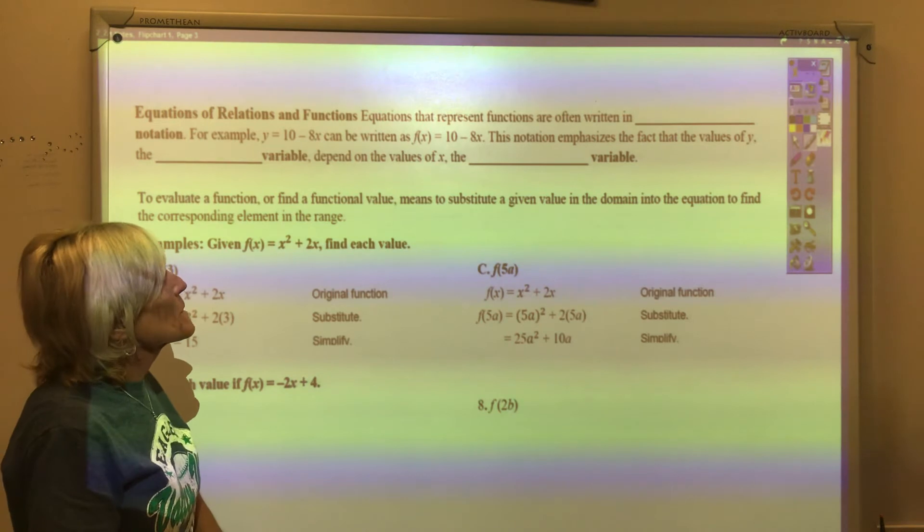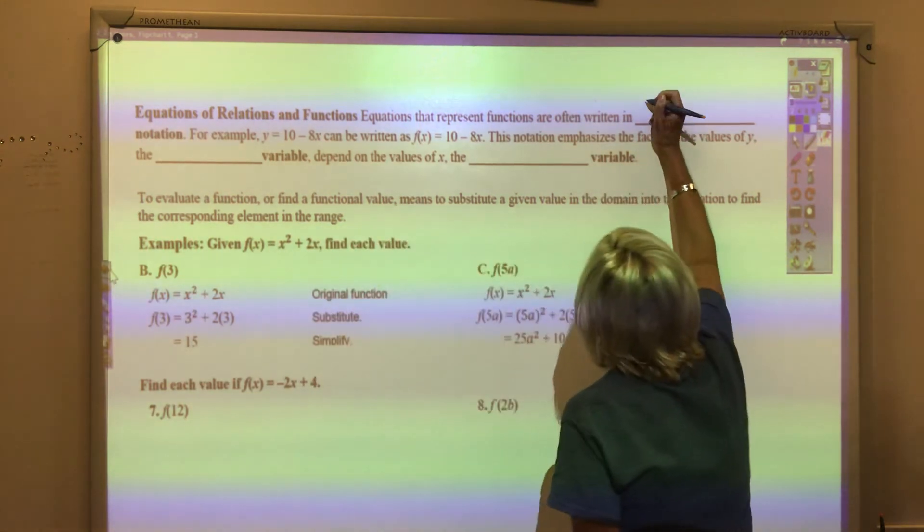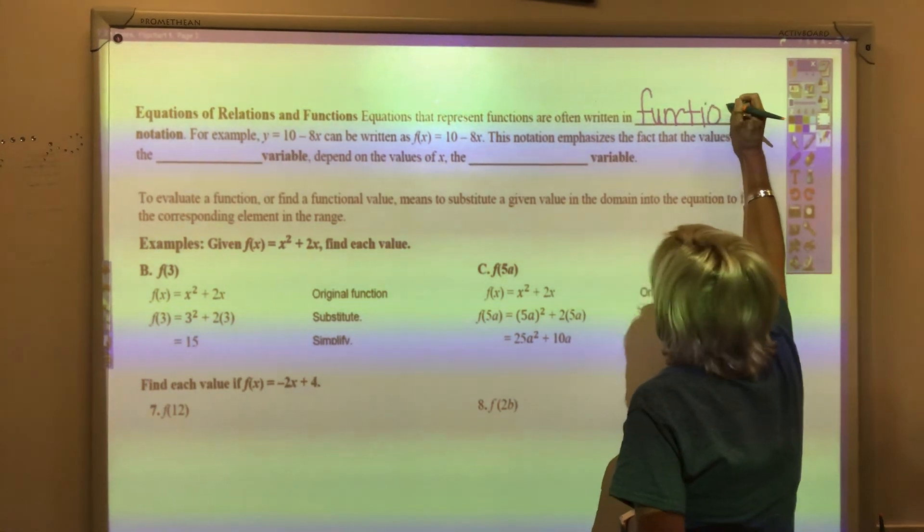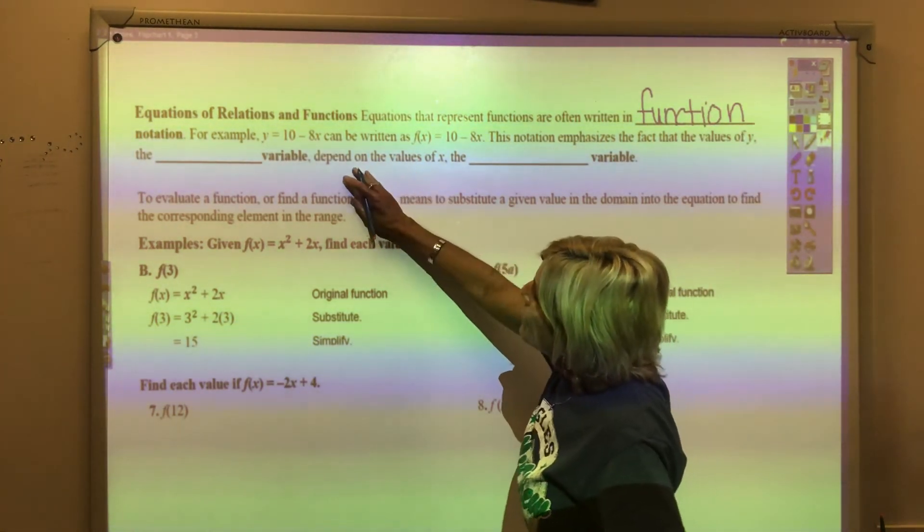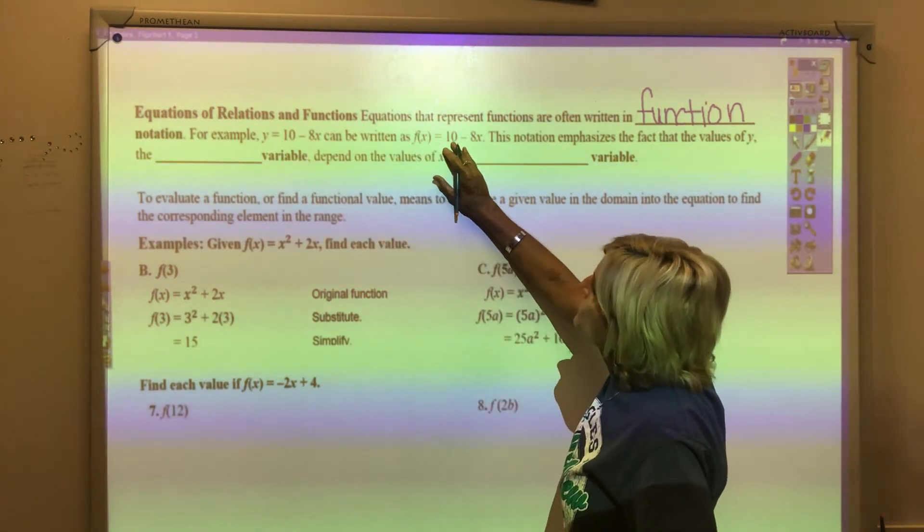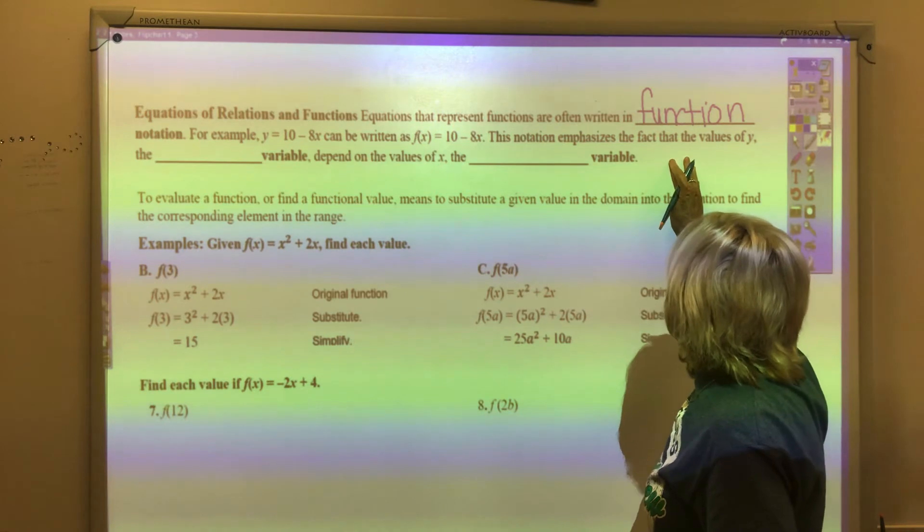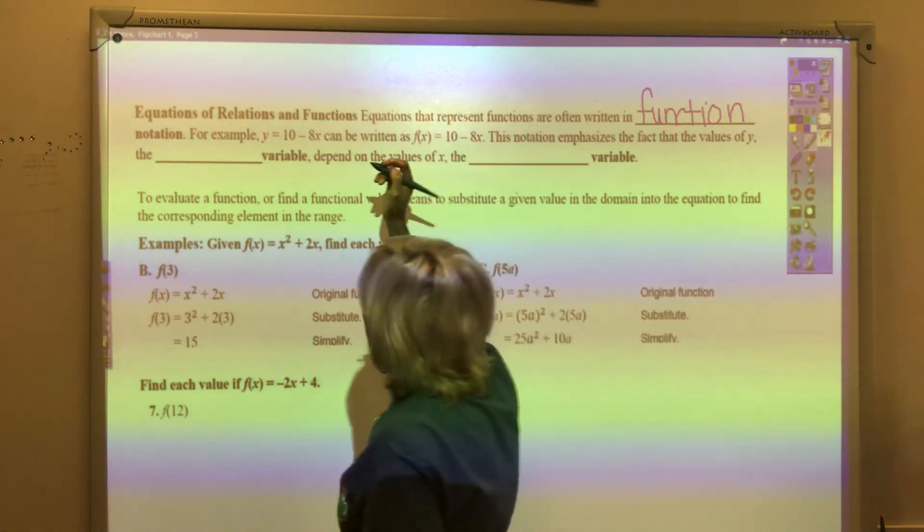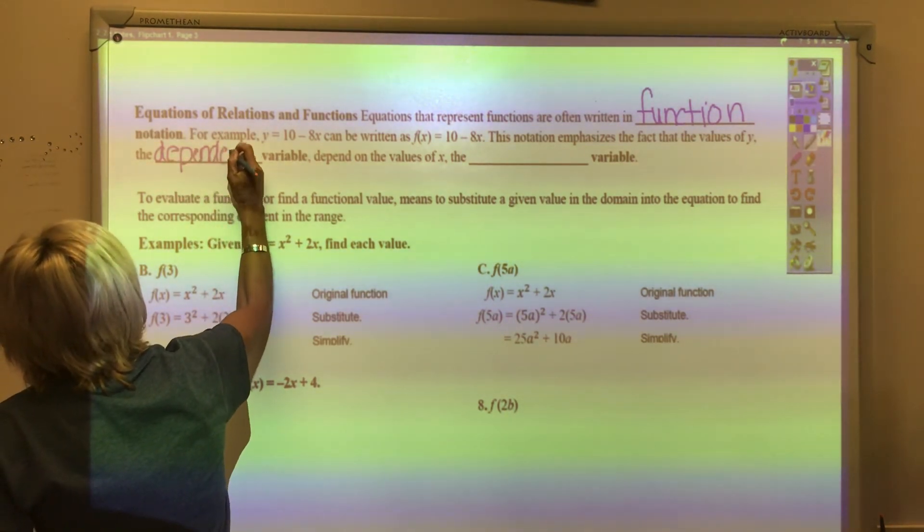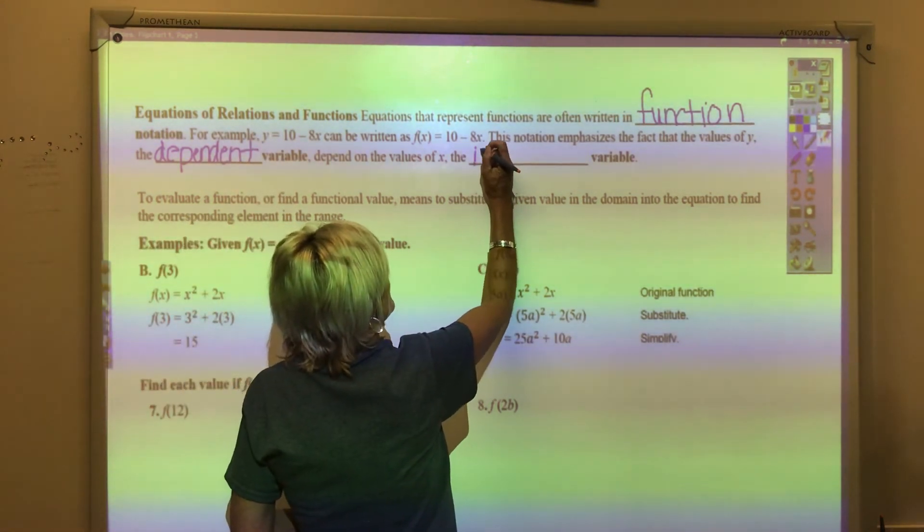Equations that represent functions are often written in function notation. For example, y equals 10 minus 8x can be written as f(x) equals 10 minus 8x. This notation emphasizes the fact that the values of y, the dependent variable, depend on the values of x, the independent variable.